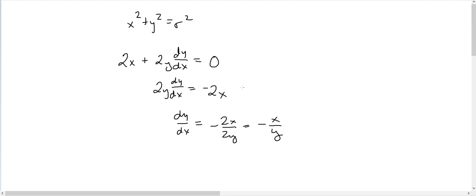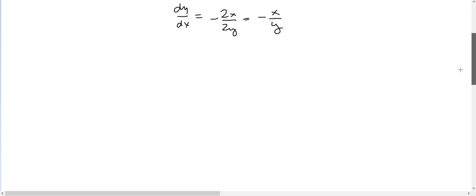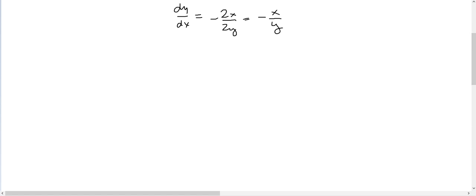Now that we know dy/dx, we can use the calculus formula for arc length, which is the integral from a to b of the square root of 1 plus f′(x) squared. We now know that f′(x) is −x/y, so we can substitute this into the arc length formula to find the total length around the circle.